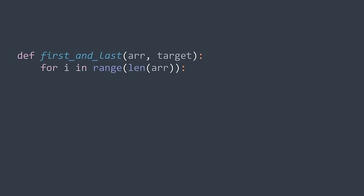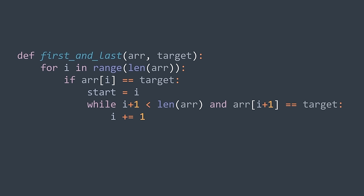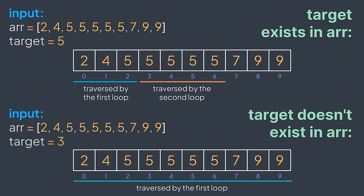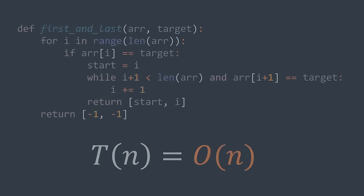In code, we start traversing indexes of r, and if r[i] == target, we found the start position. Now we keep walking while the next element exists and equals target: while i+1 < len(r) and r[i+1] == target, we increment i. After the while loop, i represents the position of the last occurrence, so we return [start, i]. If the full loop finishes without returning, target wasn't found in r — we return [-1, -1]. Note that it's possible for start to equal end when there is only one occurrence of target.